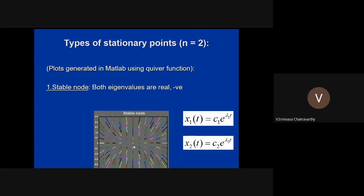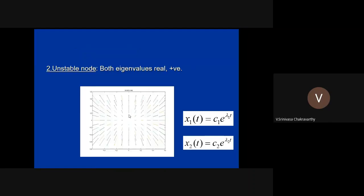Now consider the case where both eigenvalues are real but positive. Then e^(λ1·t) and e^(λ2·t) both blow up with time, so x1 and x2 keep growing. No matter where you start, you move away from the origin. Even if you start at the origin, any small perturbation causes you to be repelled and go off to infinity. This is an unstable node.